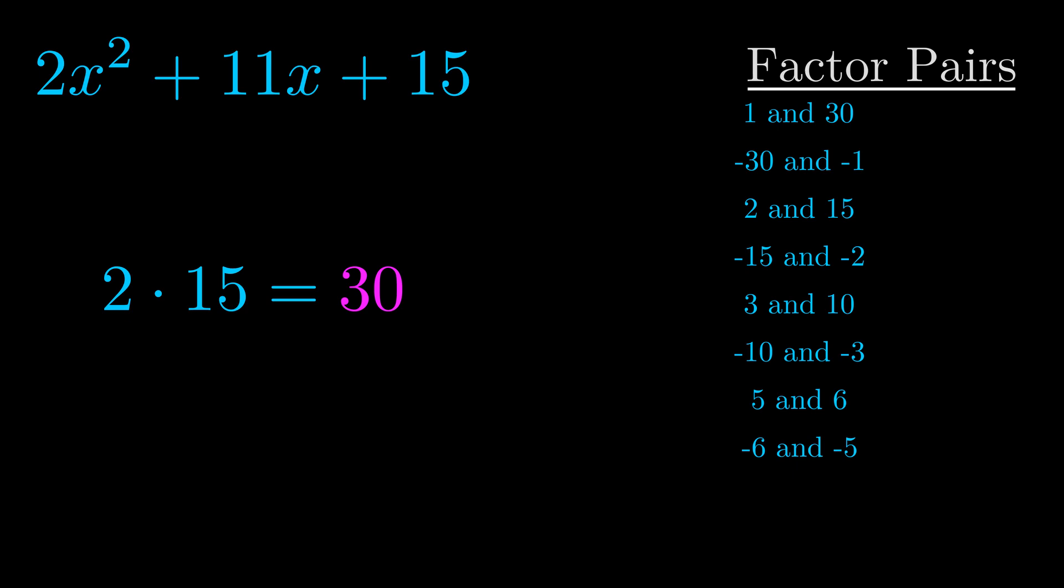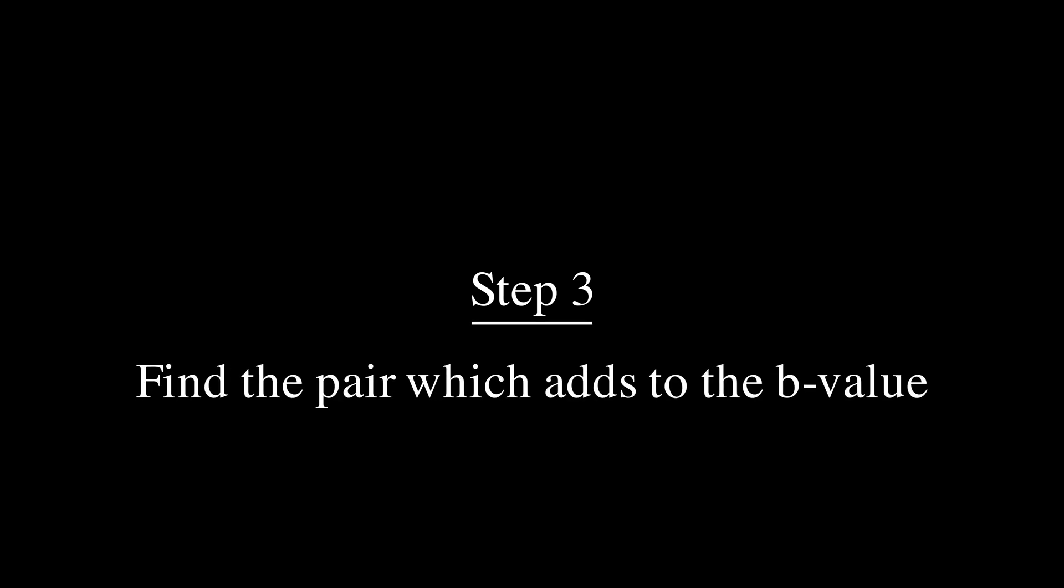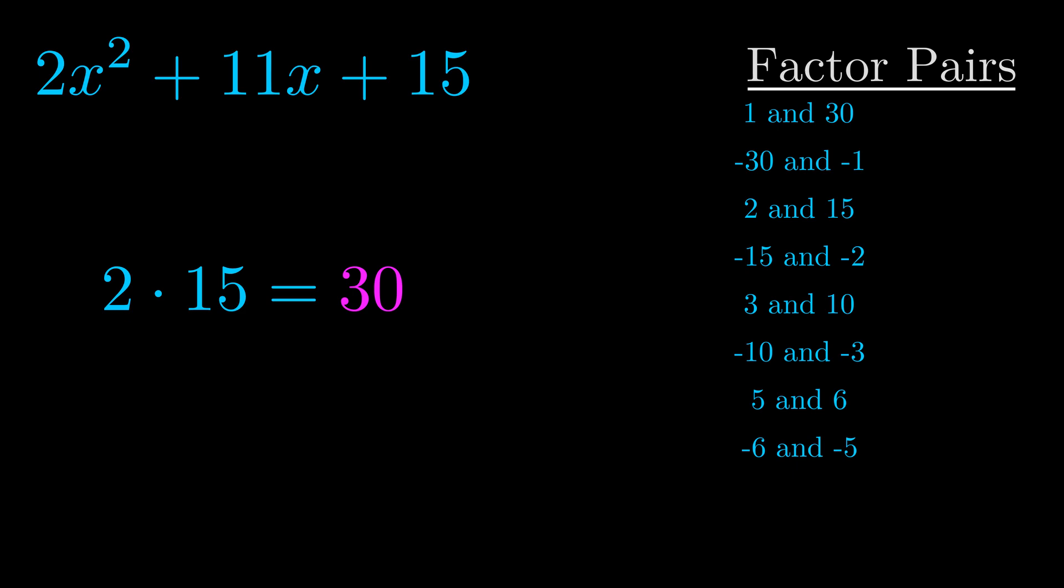Now once you have these factor pairs the goal is to find which of these pairs adds to the b value. The b value is the coefficient on the x term. That's the middle term, the one that we haven't done anything with yet.